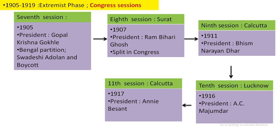Then you can see the 1911 session, the 1916 session, and the 1917 session, which was the first time a woman presided over a session — her name is Annie Besant. So let's discuss this phase and see how the extremist phase started.